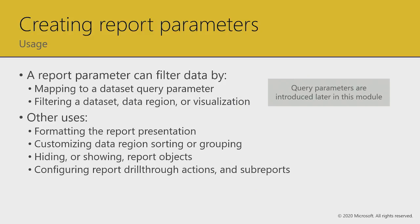One great example is you can actually choose different visuals to show — a parameter that says show a chart of the data or show a table of the data. It's sort of like bookmarking in Power BI reports in a way. Another use of report parameters is to hide or show report objects. They can also be used for configuring report drill-through actions and sub-reports, although that's not currently supported — hopefully possible in a future release.